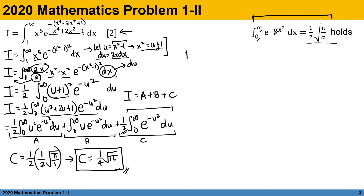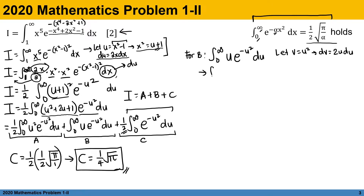Next, let us solve for B. B is the integral from 0 to infinity of u exponential of negative u squared du. We apply substitution: let v equal u squared, such that dv equals 2u du. We transform this as the integral of 2 over 2 times u times e to the negative u squared du. We group 2u and du as dv and change the exponent u squared into v. The limits do not change: when u equals 0, v equals 0, and when u equals infinity, v equals infinity.